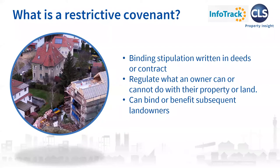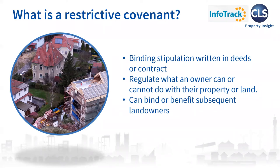So we start with what actually is a restrictive covenant? They're binding stipulations that are written into a property's deeds or contract, typically by a seller, to regulate what a home or property owner can or cannot do with their house or land under specific circumstances. These covenants can bind or benefit subsequent landowners. How might they arise? Typically, sellers impose certain terms on buyers to protect the land they were selling on the grounds of what they believe to be important. These restrictive covenants are placed on the new title and then persist as ownership changes hands.